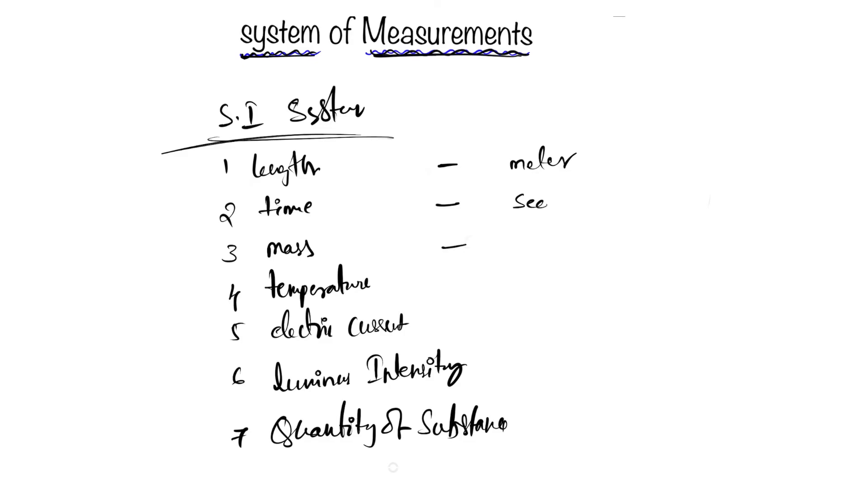For temperature it's Kelvin, for current it's amperes, for luminous intensity it's candela, and for quantity of substance it's mole. That's all about systems of measurements.